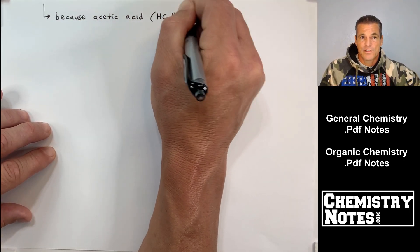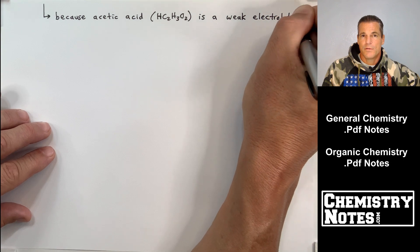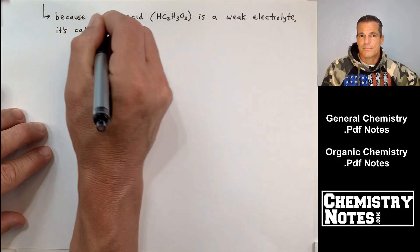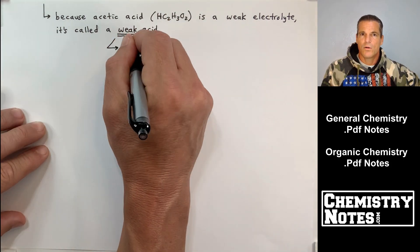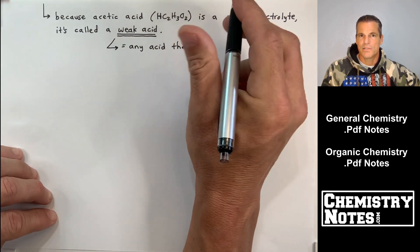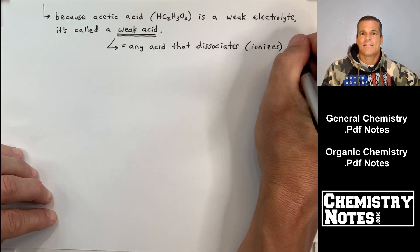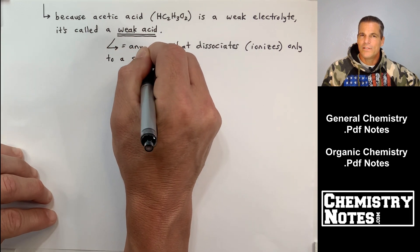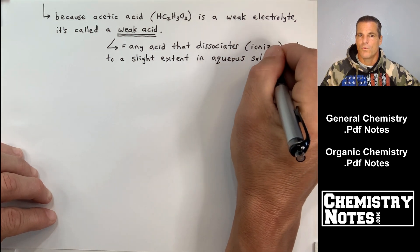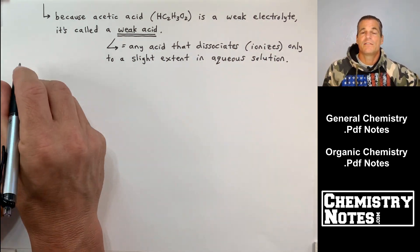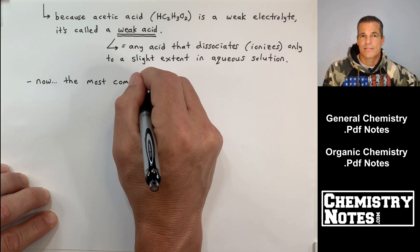So let's summarize that here in our notes at the top of page 3. Because acetic acid, HC2H3O2, is a weak electrolyte, then it's also a weak acid. Strong acids are strong electrolytes, weak acids are weak electrolytes. Now let's just define weak acid. A weak acid is any acid that dissociates or ionizes only to a slight extent in aqueous solution. So it stays mainly in its reactant form or its together form, only dissociates a little bit.